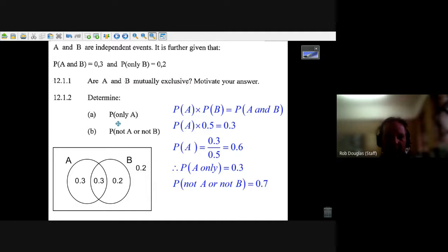Now, how do you work this thing out? Well, it's so nice to draw a Venn diagram here. Put A, put B, the probability of A and B is 0.3, so put it in. The probability of B is 0.2, so you can put that in. The probability of only B is 0.2, so you can put that in.